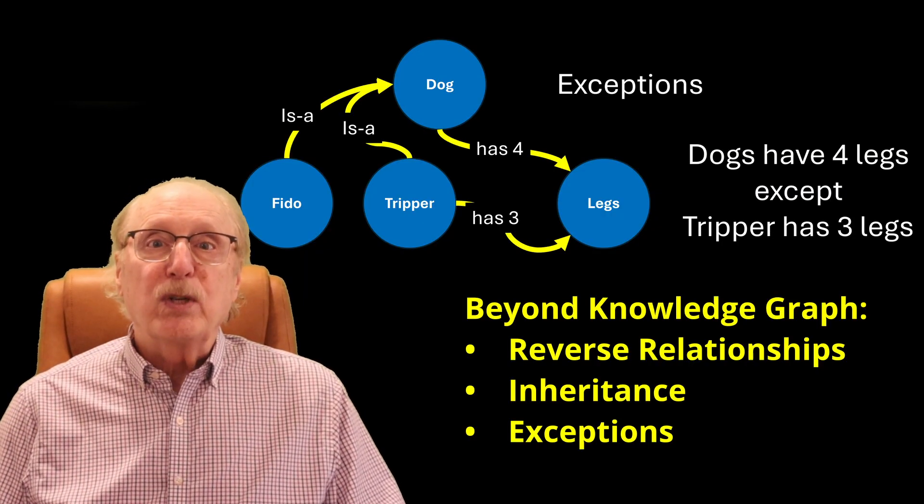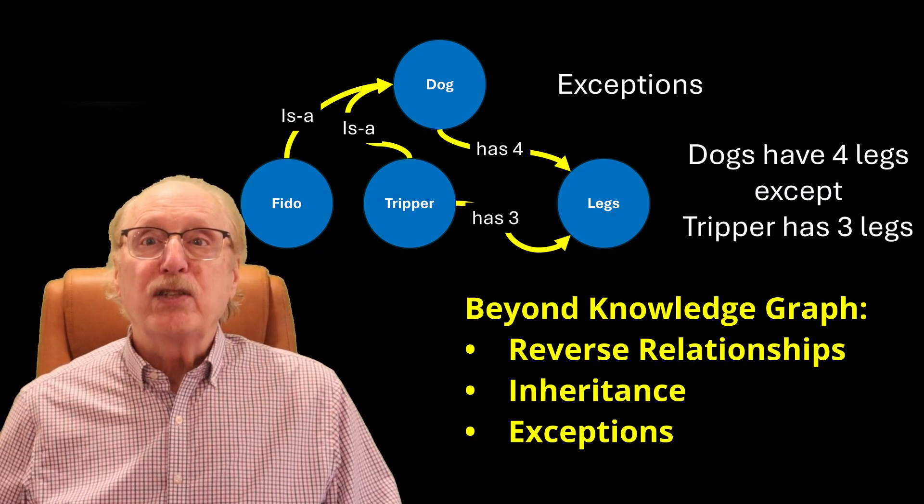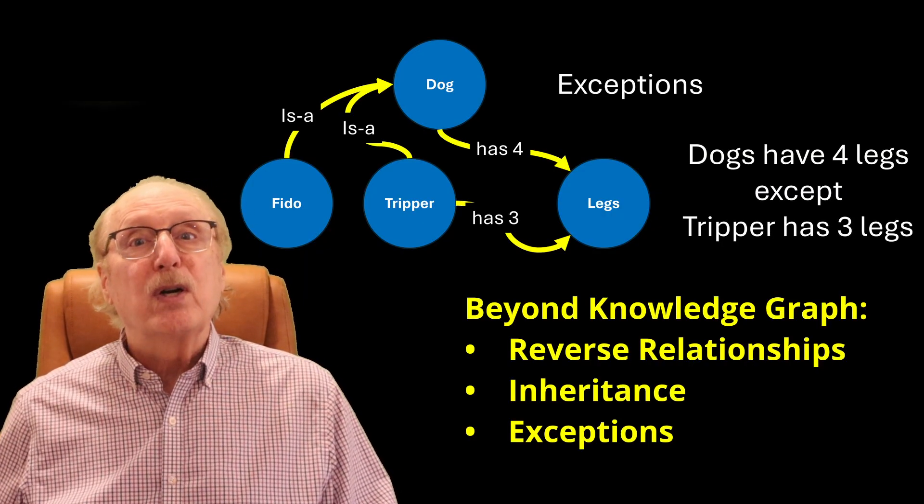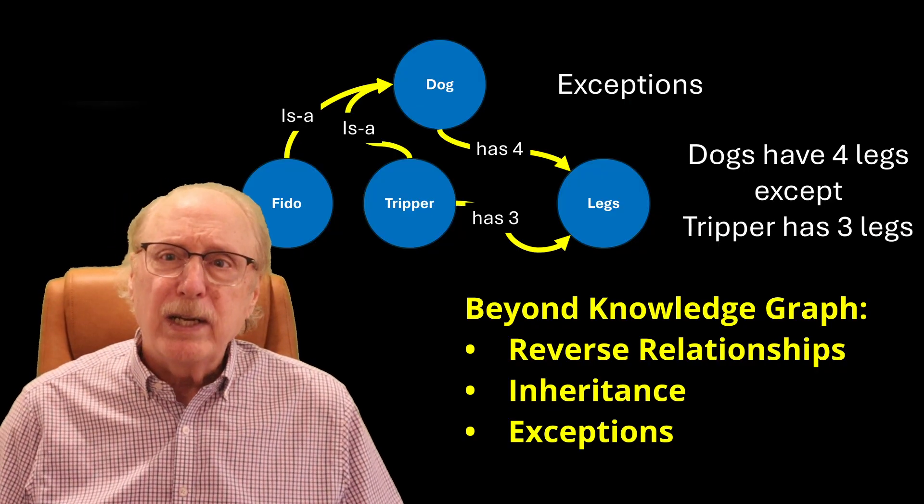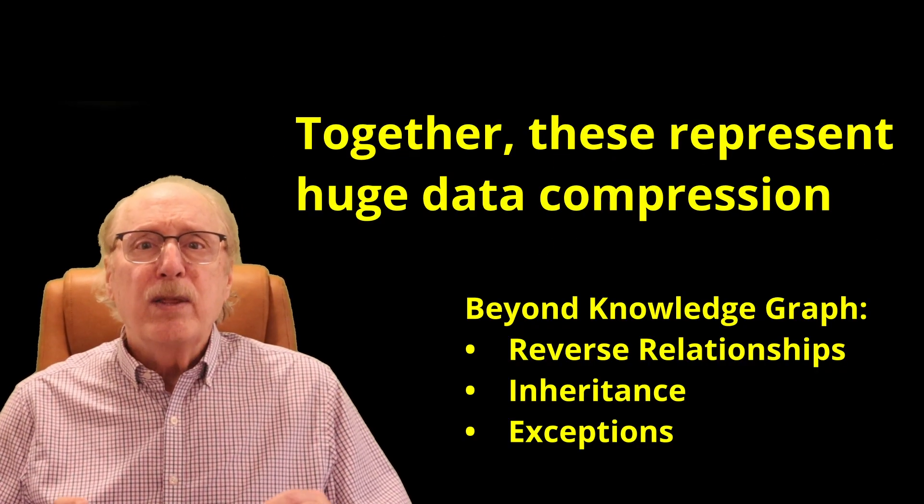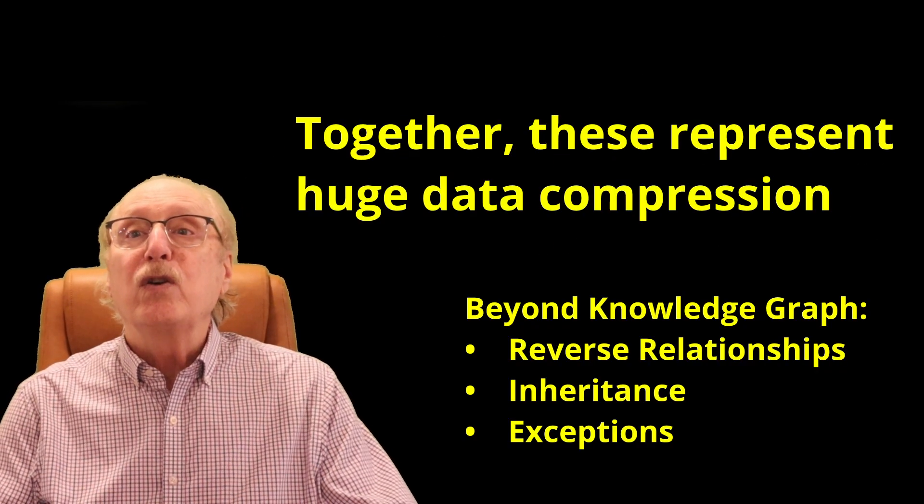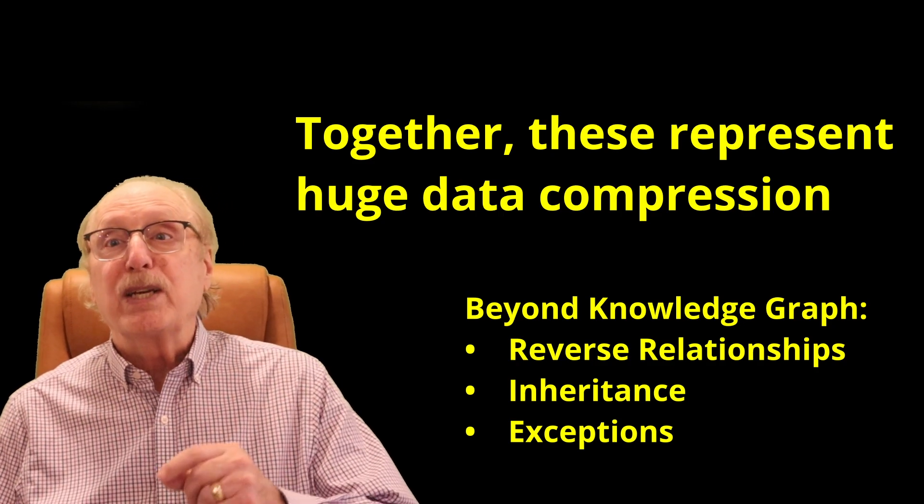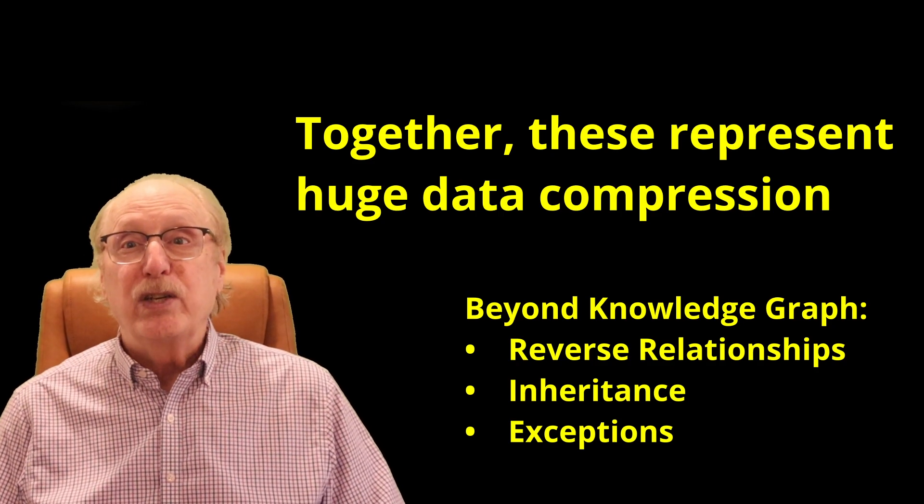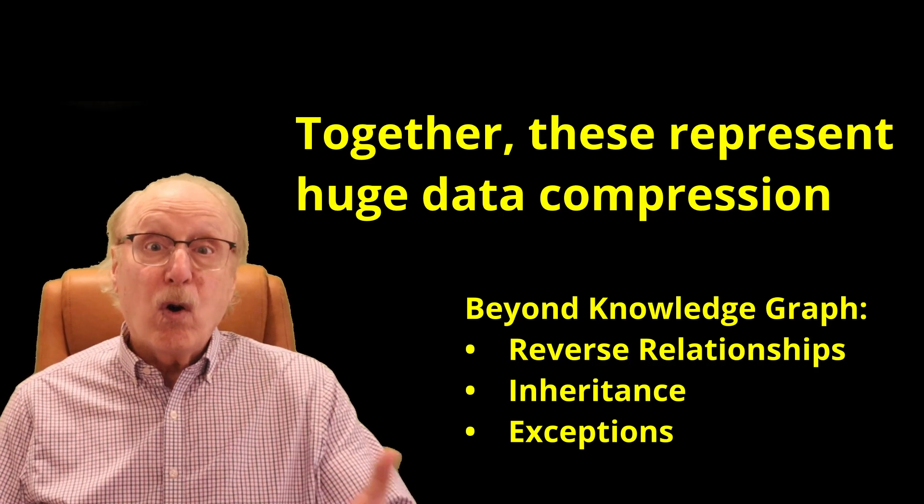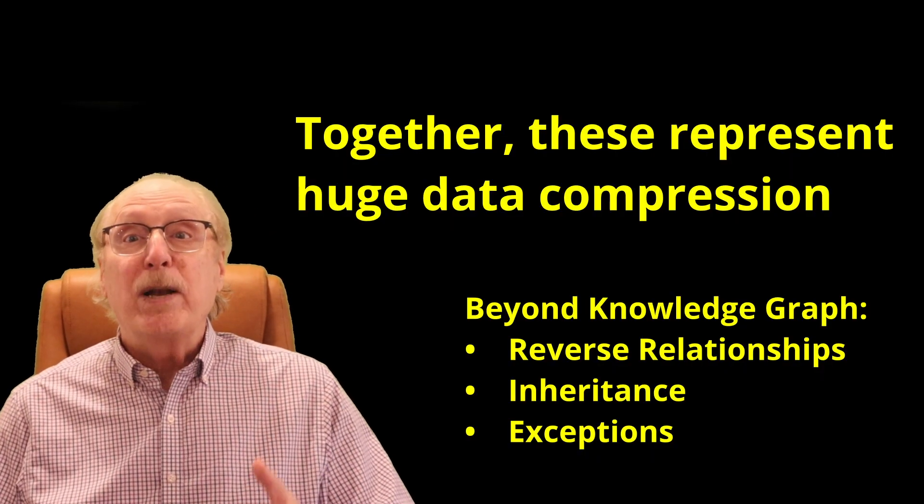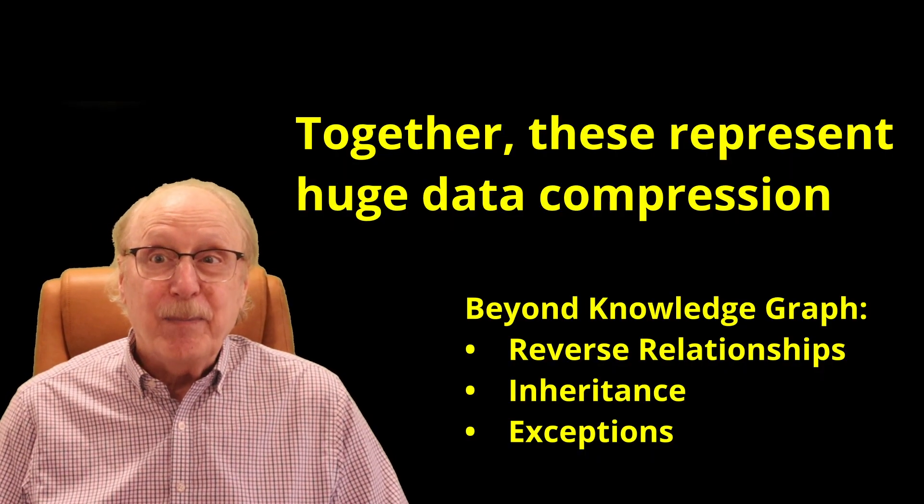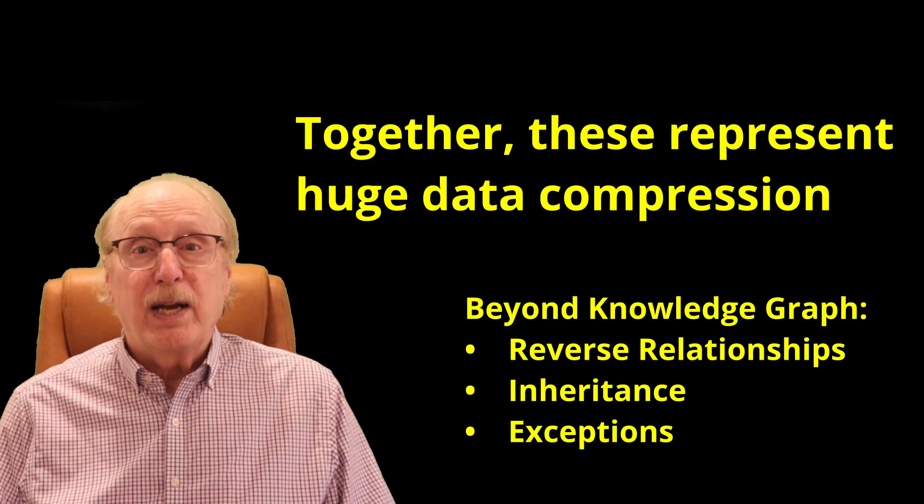Further, the graph supports exceptions, so it can easily represent that Tripper is a dog but Tripper only has three legs. Taken together, these features represent a huge mechanism for data compression because the only information you need to know about FIDO or Tripper, or anything else, is what makes that thing unique. All other knowledge can be inherited on the fly.